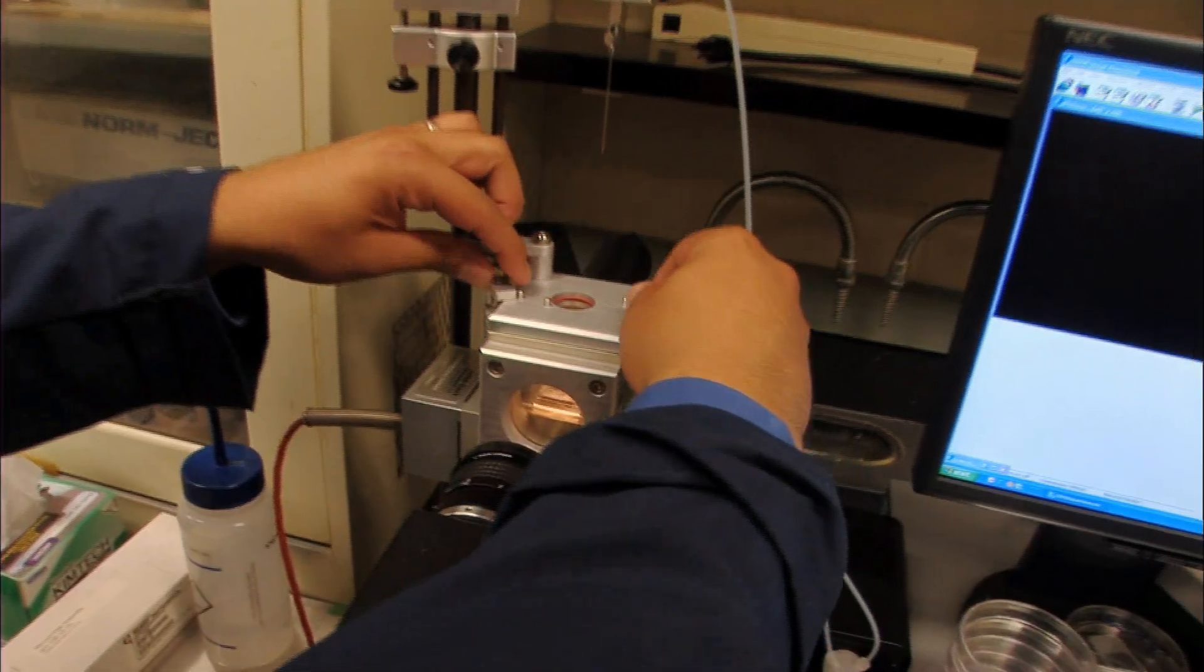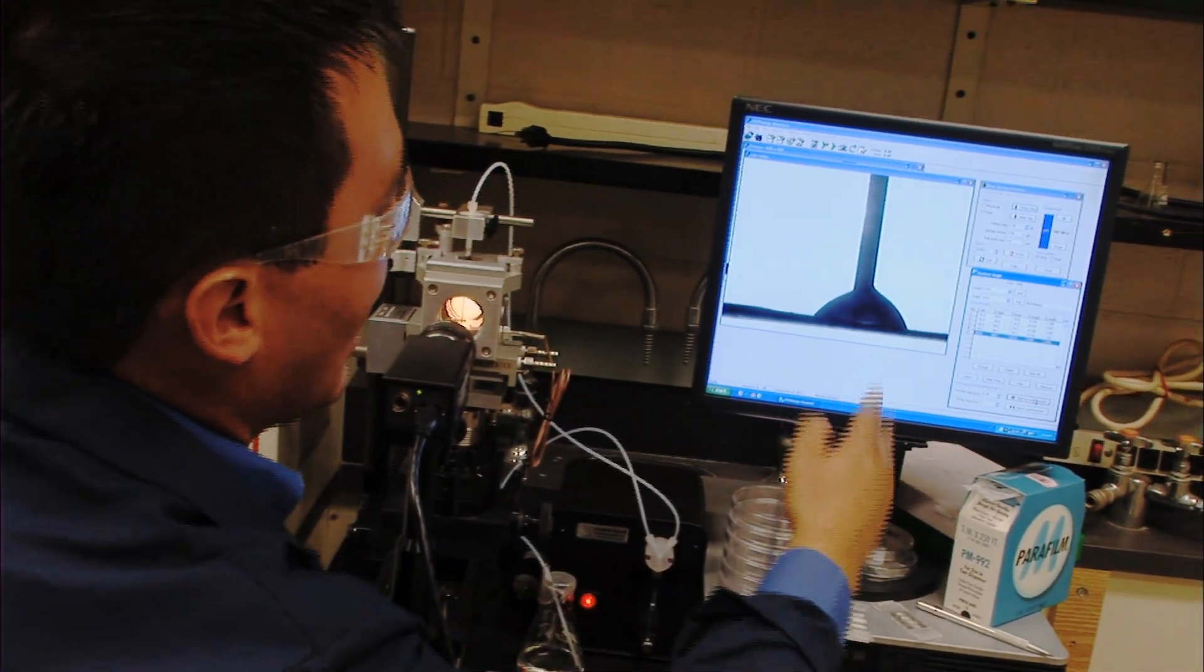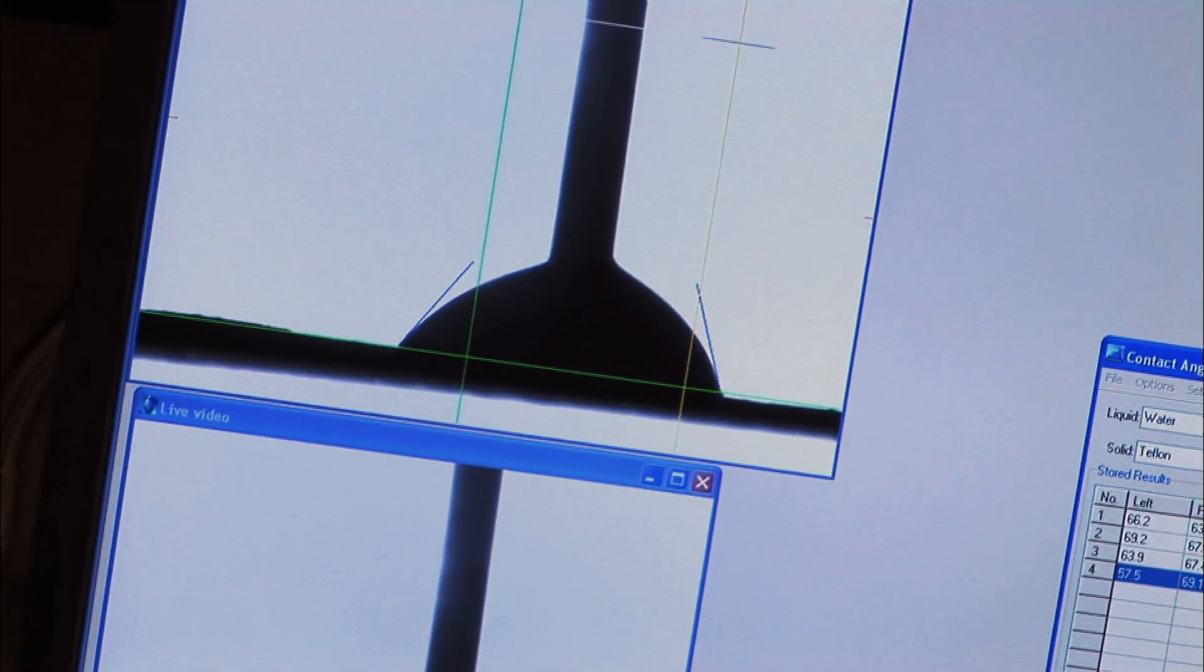It is crucial to understand the physics and the chemistry of the surface. You can see here that we increase the volume of the droplet. The droplet basically is sliding at the surface.